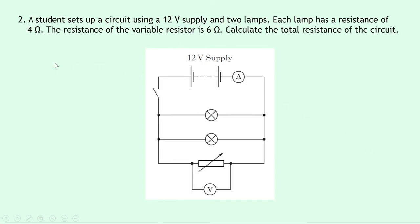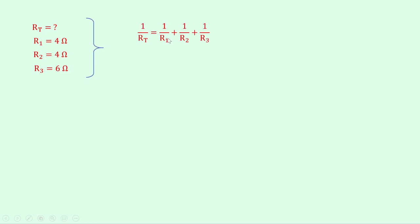Question 2 says that a student sets up a circuit using a 12 volt supply and 2 lamps. Each lamp has a resistance of 4 ohms. The resistance of the variable resistor is 6 ohms. Calculate the total resistance of the circuit. We've got a 12 volt supply with an ammeter, a switch, then 2 bulbs in parallel with a variable resistor, and a voltmeter across the variable resistor. So we have three components in parallel: R1 is 4 ohms, R2 is 4 ohms and R3 is 6 ohms. Using our total resistance in parallel equation: 1/RT = 1/R1 + 1/R2 + 1/R3.